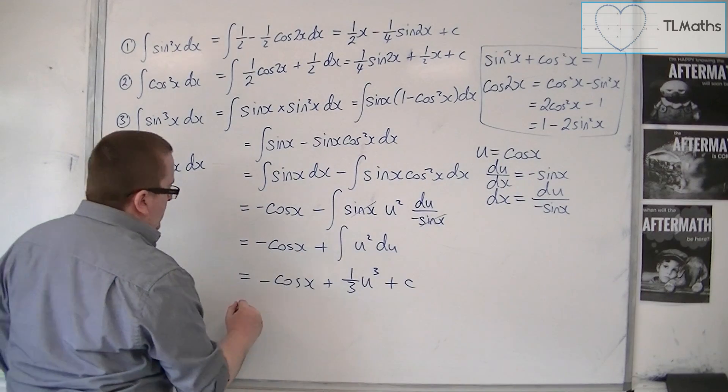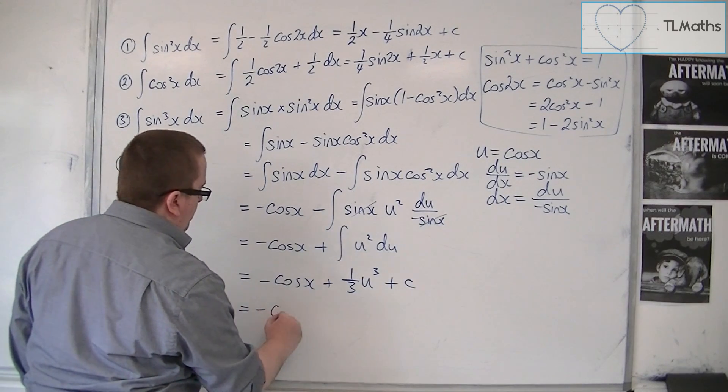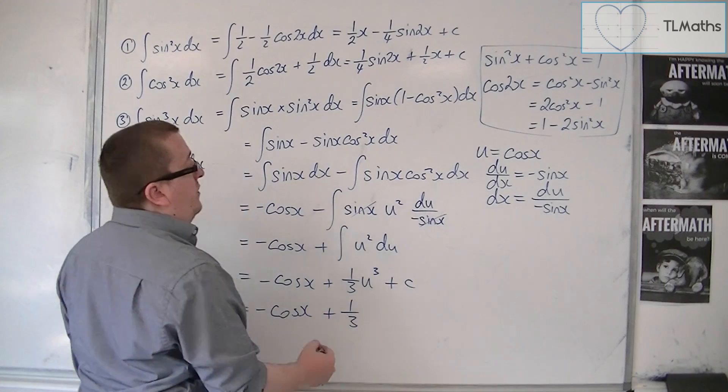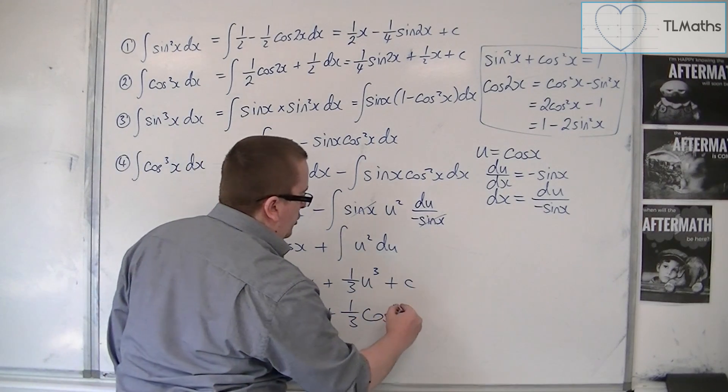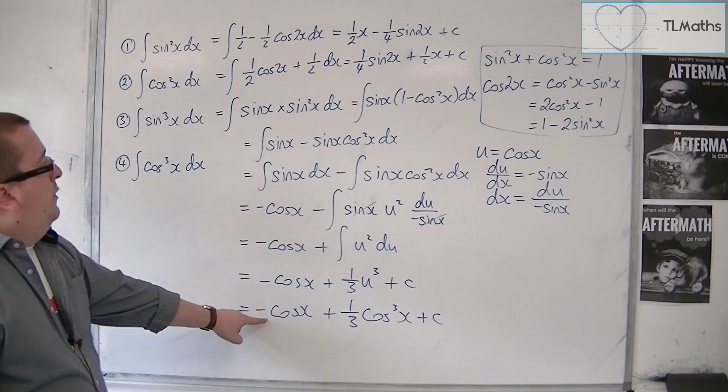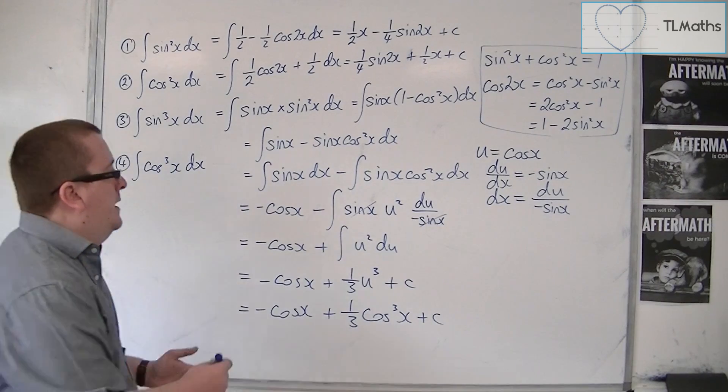And then you must replace the u. So we've got minus cosx plus one third of cos cubed x plus c. And that is the integral of sin cubed.